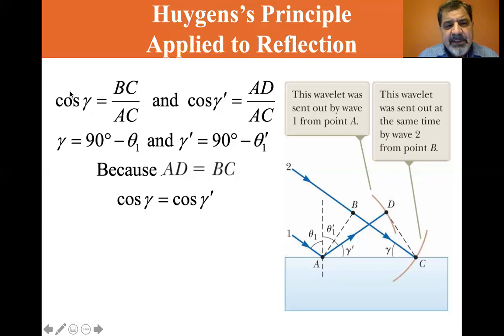Let's look at the analysis. Cosine of gamma is equal to BC over AC, the adjacent over the hypotenuse. And cosine gamma prime, this is gamma prime, that's equal to AD, the adjacent over the hypotenuse, AC. And gamma is equal to 90 degrees minus theta one, and gamma prime is equal to 90 degrees minus theta one prime.